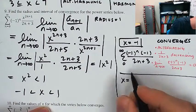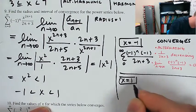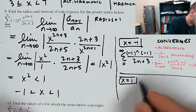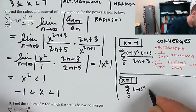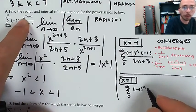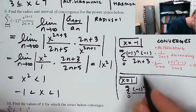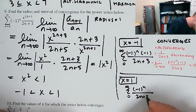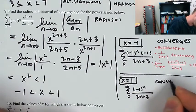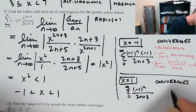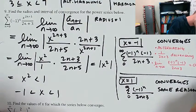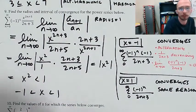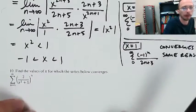Then at x equals positive 1, it's the exact same thing: (-1)^n times 1^(2n+1) divided by 2n+3. Since 1 to any power is 1, I still get (-1)^n over 2n+3, which also converges by the alternating series test for the same reasons.